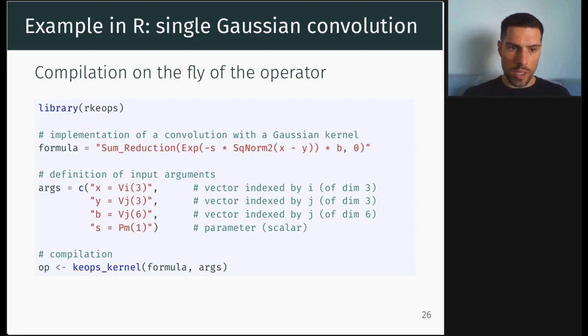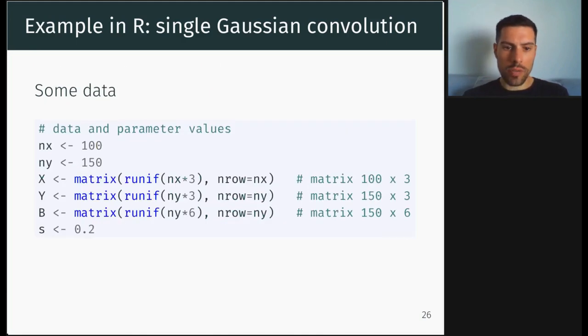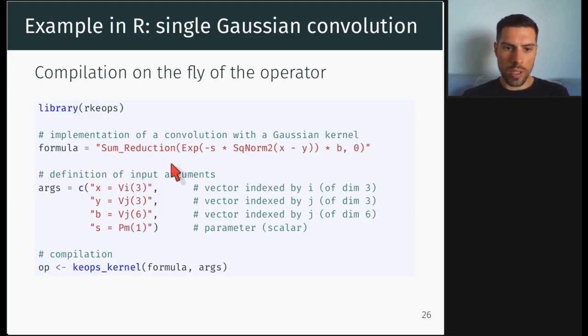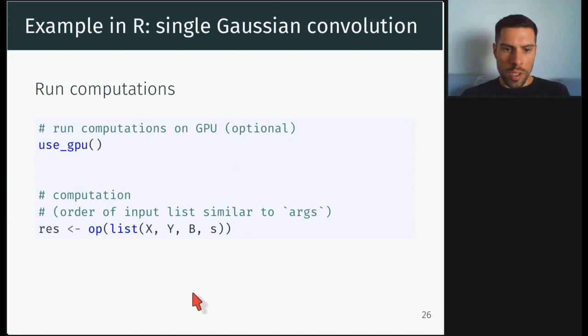So based on the formula and its arguments, you can define the new operator op. So here you will define a new function that will actually compile some C++ code. And then if you call the op function, it will compile C++ code. Let's say that you have some data whose dimension corresponds to what you wrote here. And you can then call the new op function applied to your data.